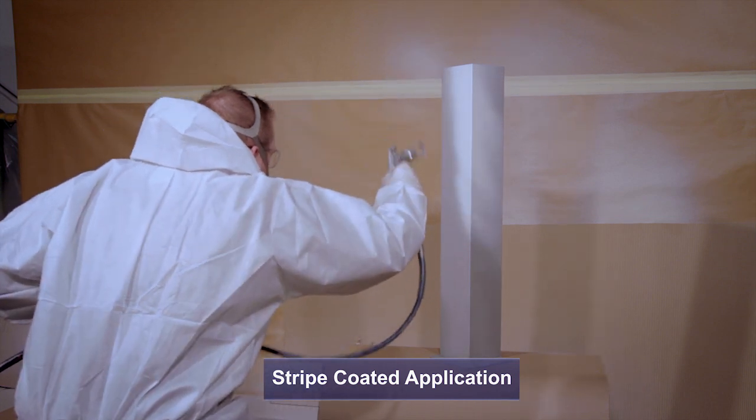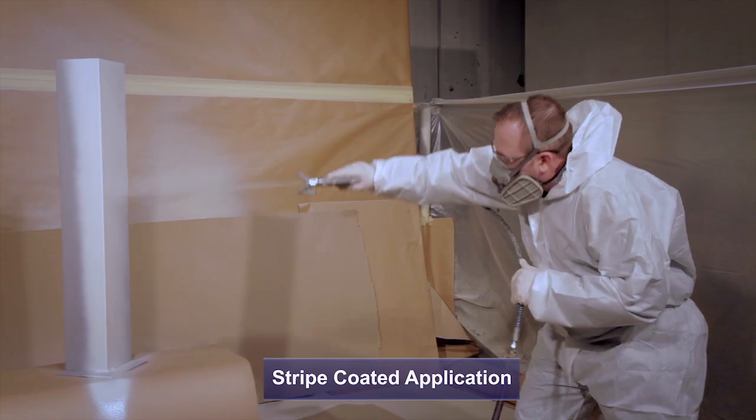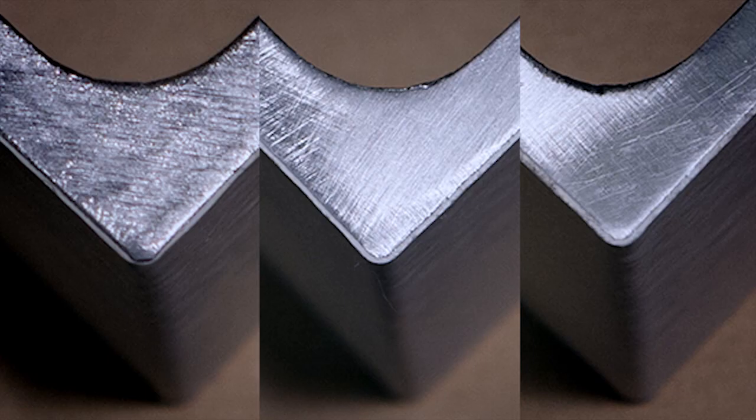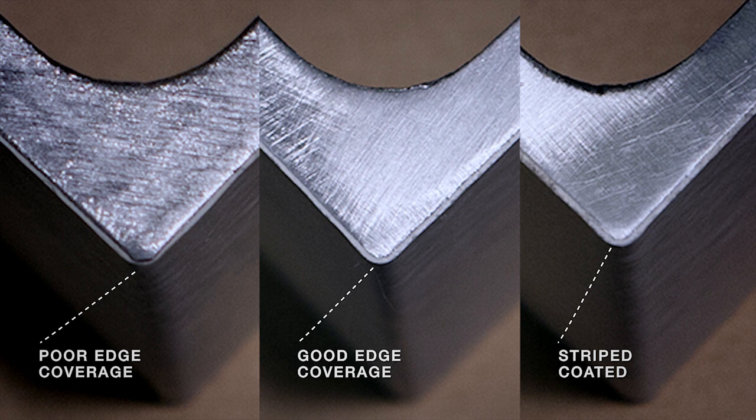Alternatively, to give extra protection, the actual corner should be stripe coated with a spray gun to ensure full coverage. Correct spray application technique on edges and corners is absolutely essential for longevity.